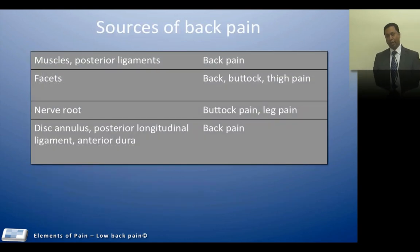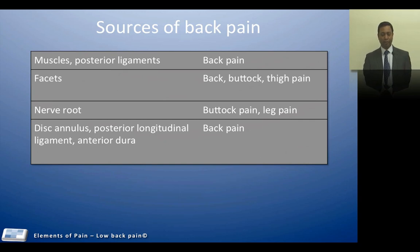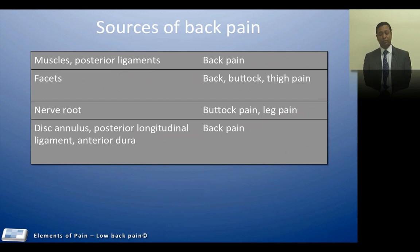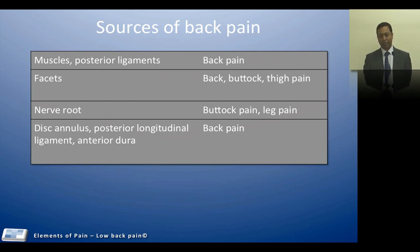Bearing in mind the organic and non-organic causes of pain, it is important to understand where the organic pathology may lie when someone presents with low back pain. This may be from the muscles, posterior ligaments, disc, posterior longitudinal ligament, or dura for back pain. For buttock or leg pain it would be from the nerve root, and if pain travels from the back into the posterior lateral thigh, it could also be from the facet joints.